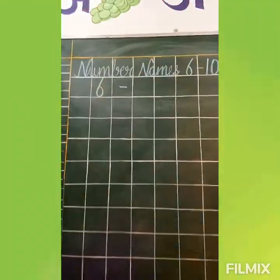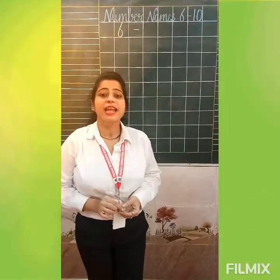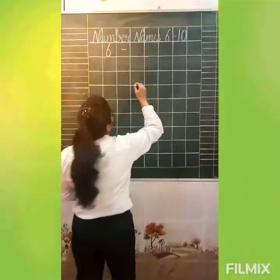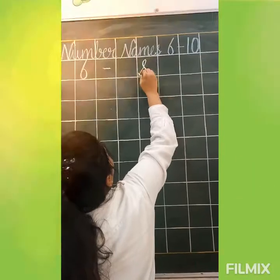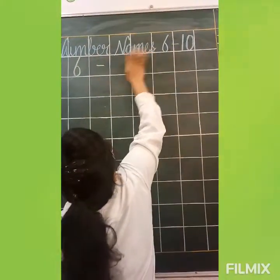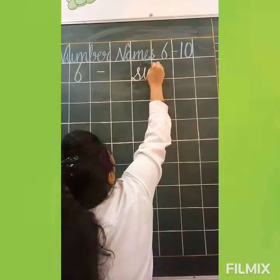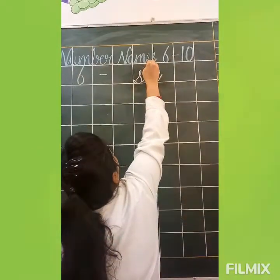And tell me, what is the spelling of 6? I will tell you. So the spelling of 6 is S-I-X. Speak with me. S-I-X. We will write here 6. S-I-X. 6.